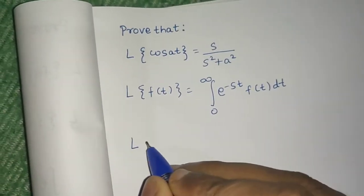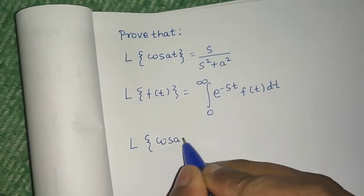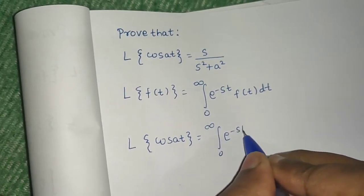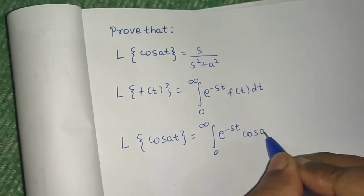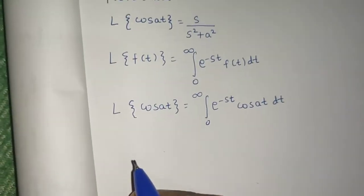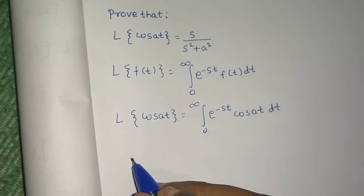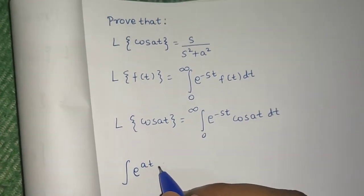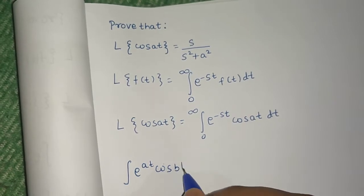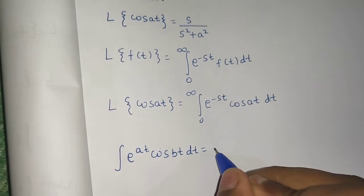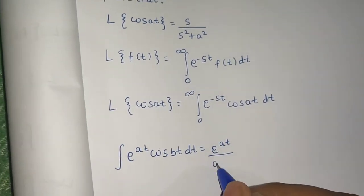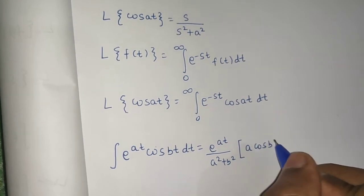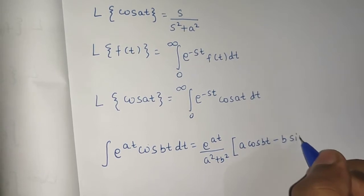Using this formula, Laplace of cos(at) will be the integral from 0 to infinity of e^(−st) · cos(at) dt. Now we know one shortcut formula: the integral of e^(at) · cos(bt) dt equals e^(at) divided by (a² + b²), multiplied by [a·cos(bt) − b·sin(bt)].